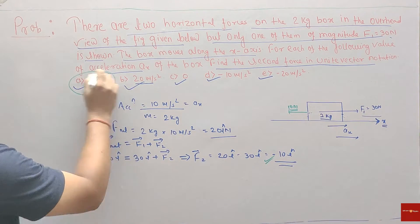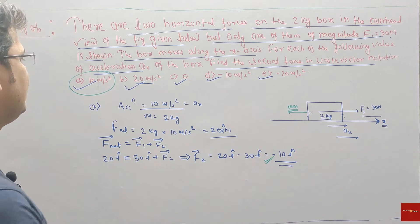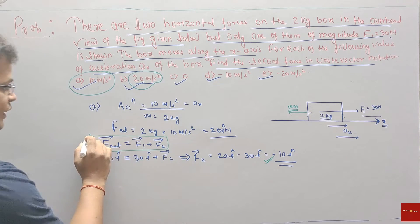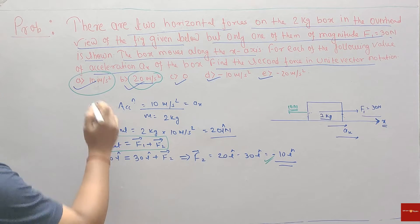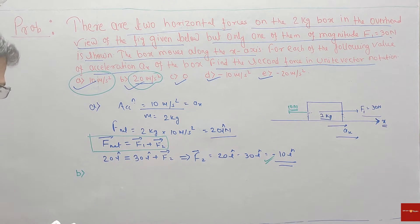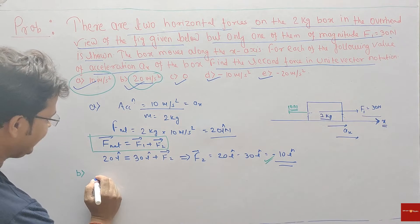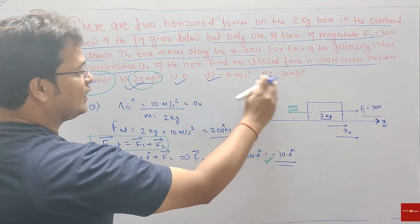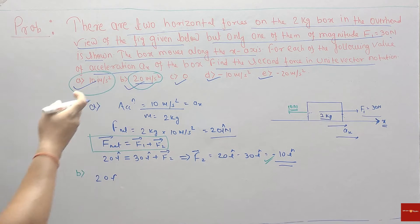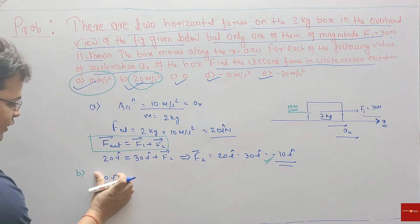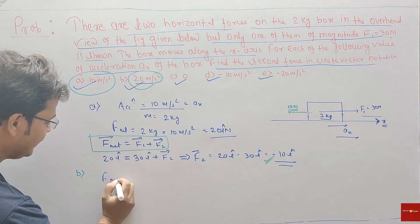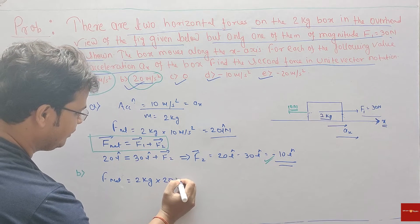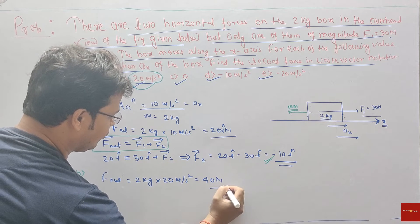Similarly, when acceleration is 20 m/s², we use the same equation. F-net equals mass into acceleration: 2 kg multiplied by 20 m/s² gives 40 Newton. So the net force is 40 Newton i-cap, since acceleration is along the positive x-axis.